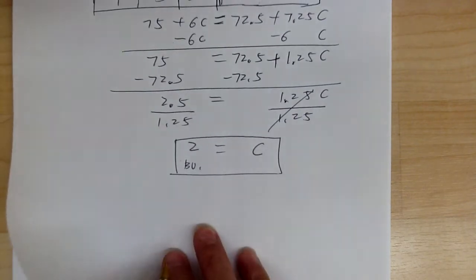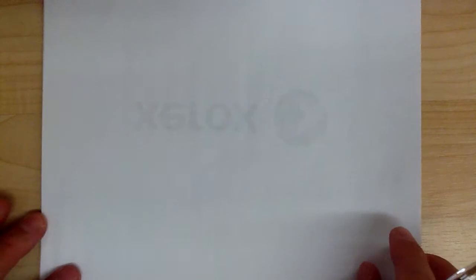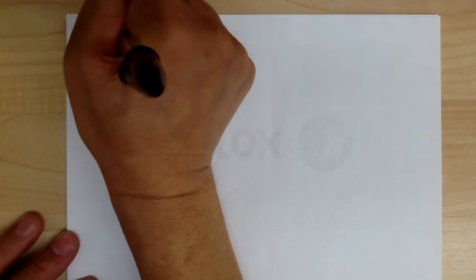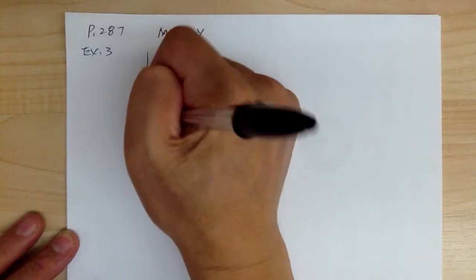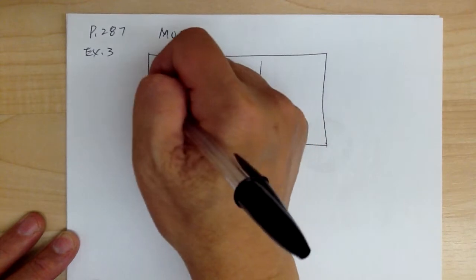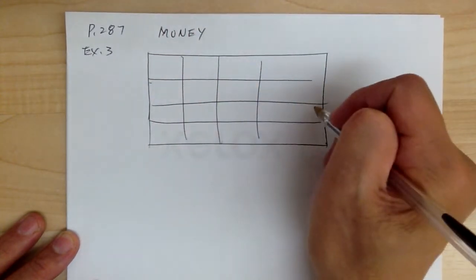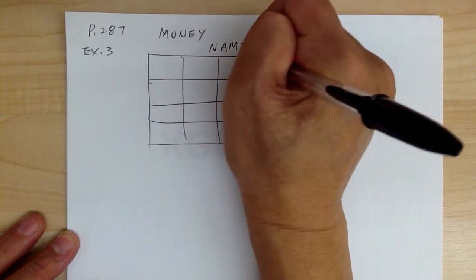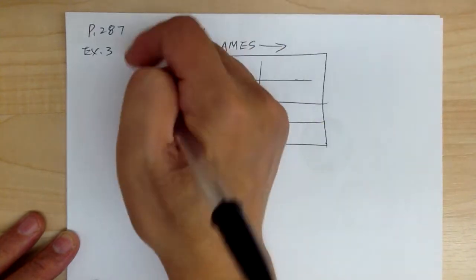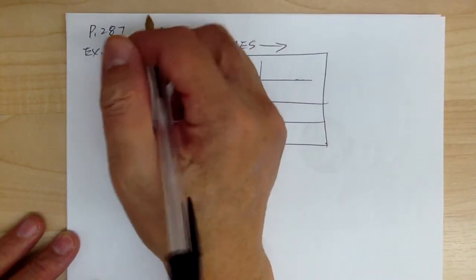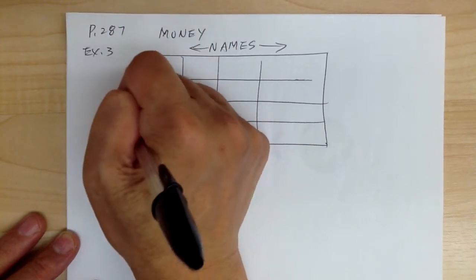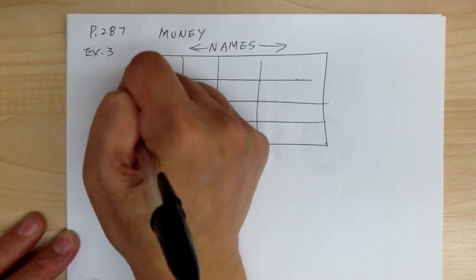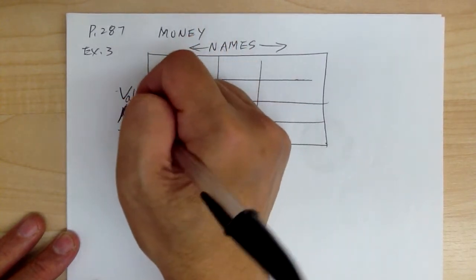Now let's go to example 3 on page 287, which deals with money — so this will use a different type of table. For money problems, the table uses VAT instead of CAT. Names of the coins go across the top, and the columns going down are: V for value, A for amount (how many), and T for total.